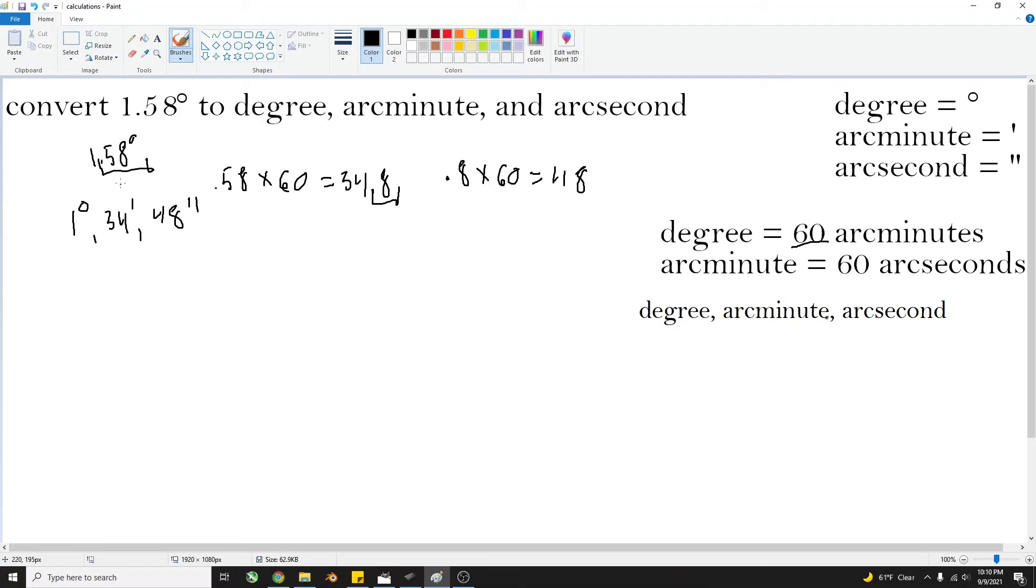So here's how this works. We're going to take the remainder of each of these and multiply it by 60. So we have these arc minutes here. These are the degrees. And we know there's 1 degree in there. And we just need to convert this 0.58 degrees into arc minutes.